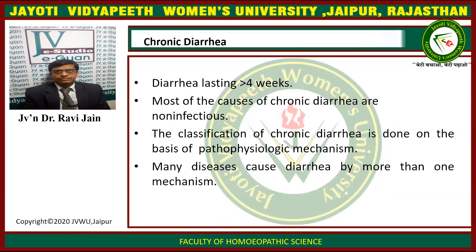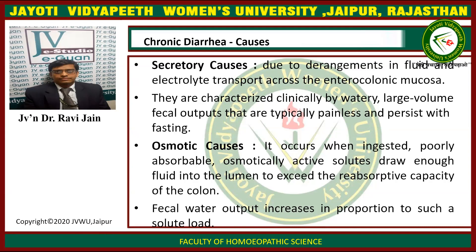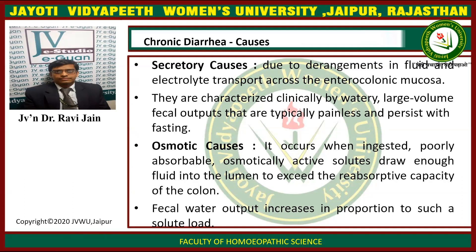Now we come to chronic diarrhea. Chronic diarrhea means diarrhea lasting for greater than 4 weeks. Most of the causes of chronic diarrhea are non-infectious. The classification is done on the basis of physiological mechanism. Many diseases cause diarrhea by more than one mechanism. Chronic diarrhea can be caused by secretory causes due to derangement of fluid and electrolyte transport across the enterocolonic mucosa. They are characterized clinically by watery, large-volume stools, typically painless and persisting with fasting. There are also various osmotic causes — occurring when ingested, poorly absorbable osmotically active solutes draw enough fluid into the lumen to exceed the absorptive capacity of the colon.